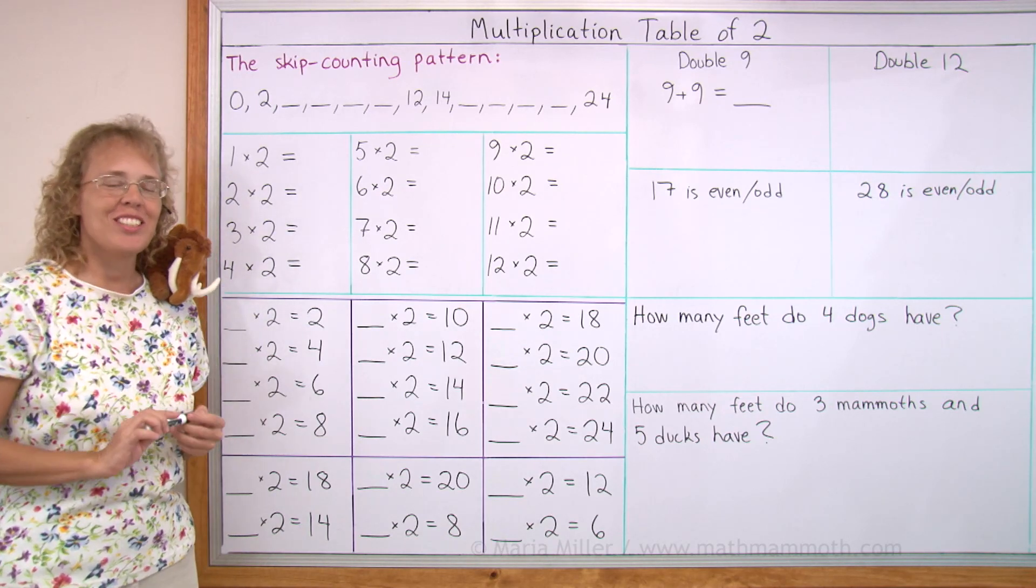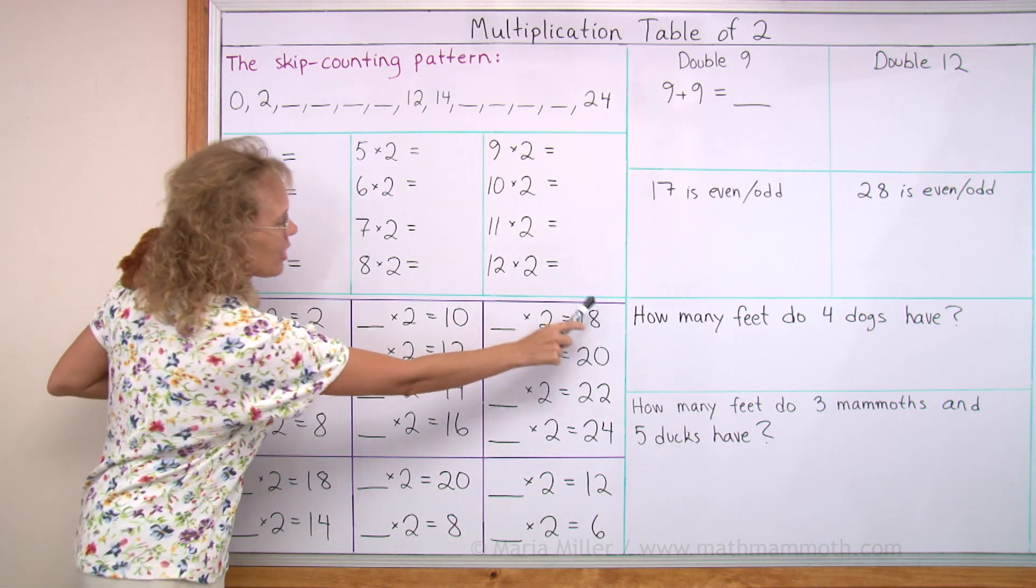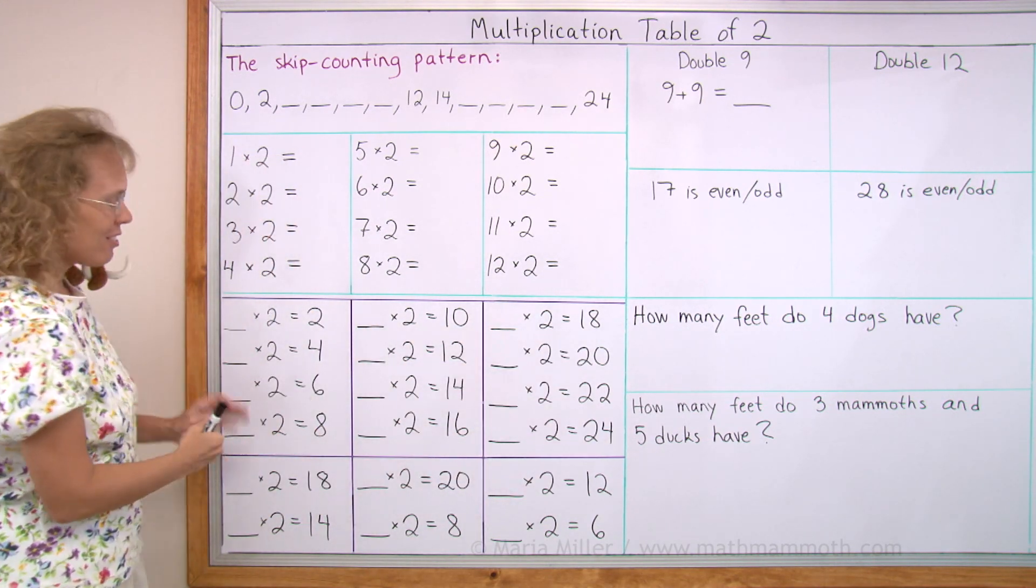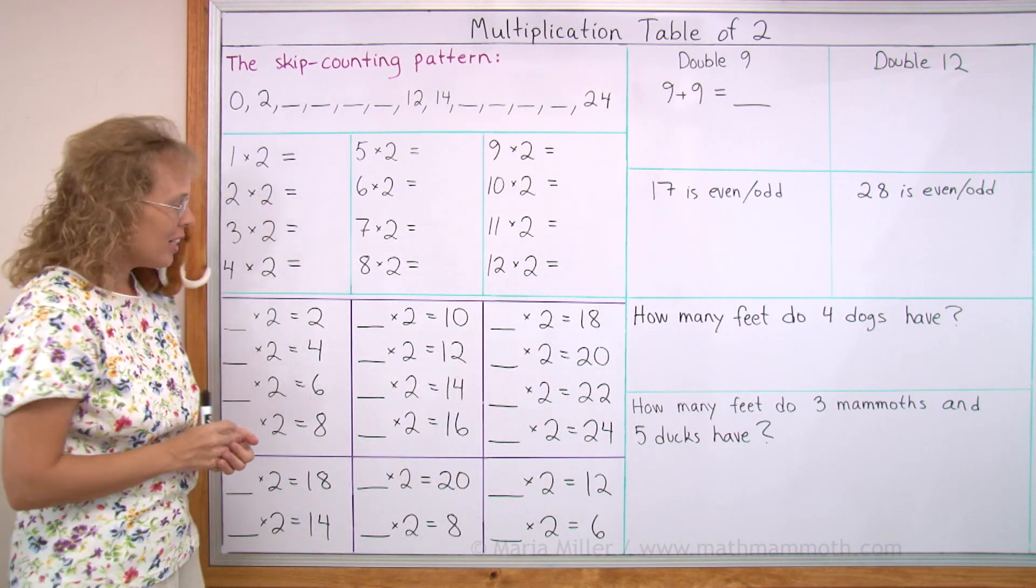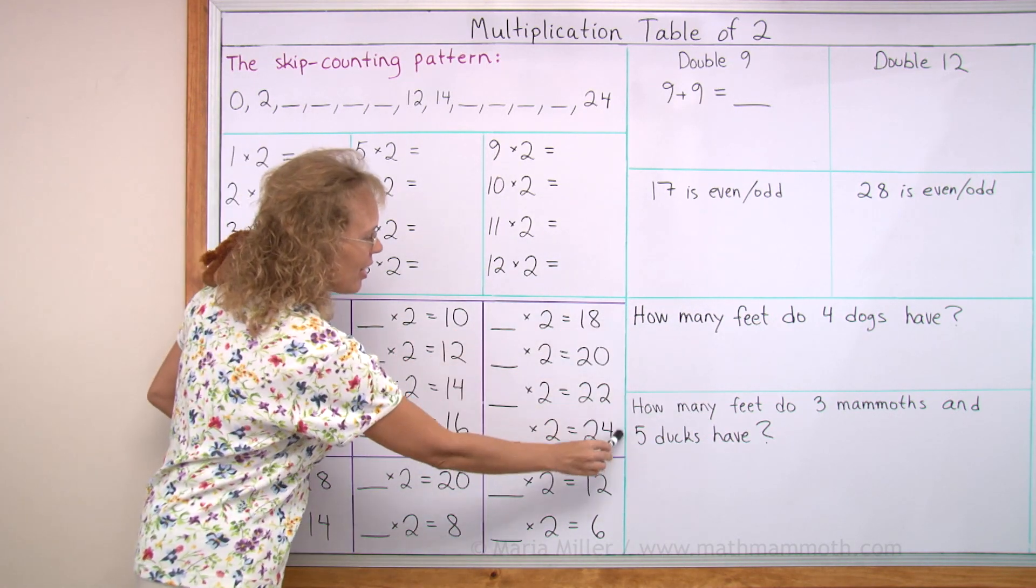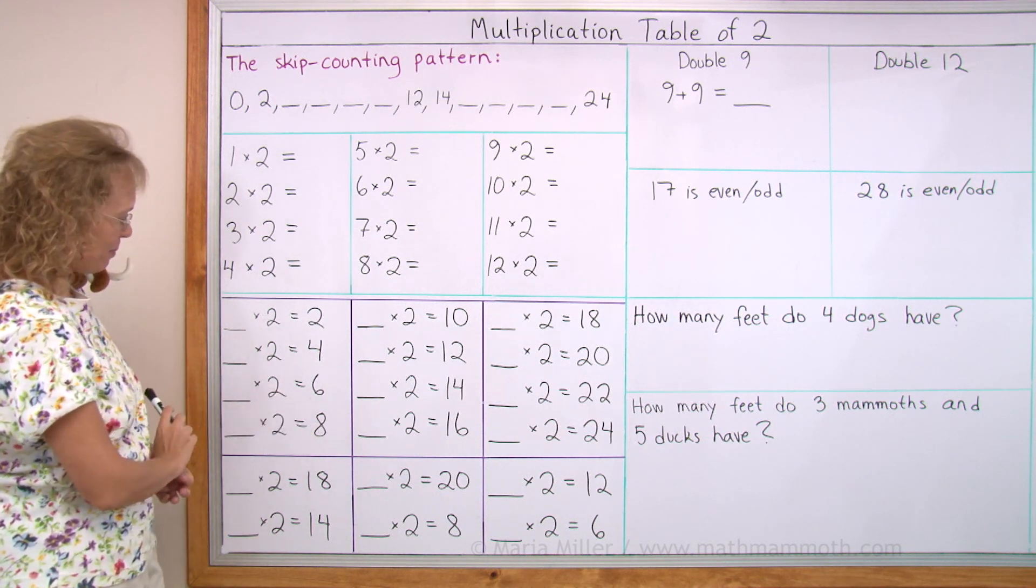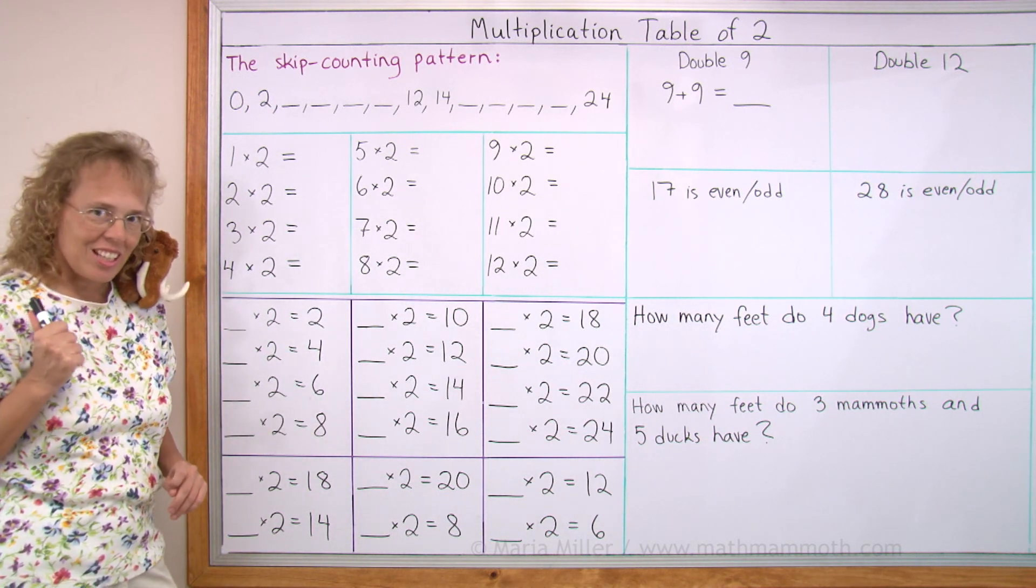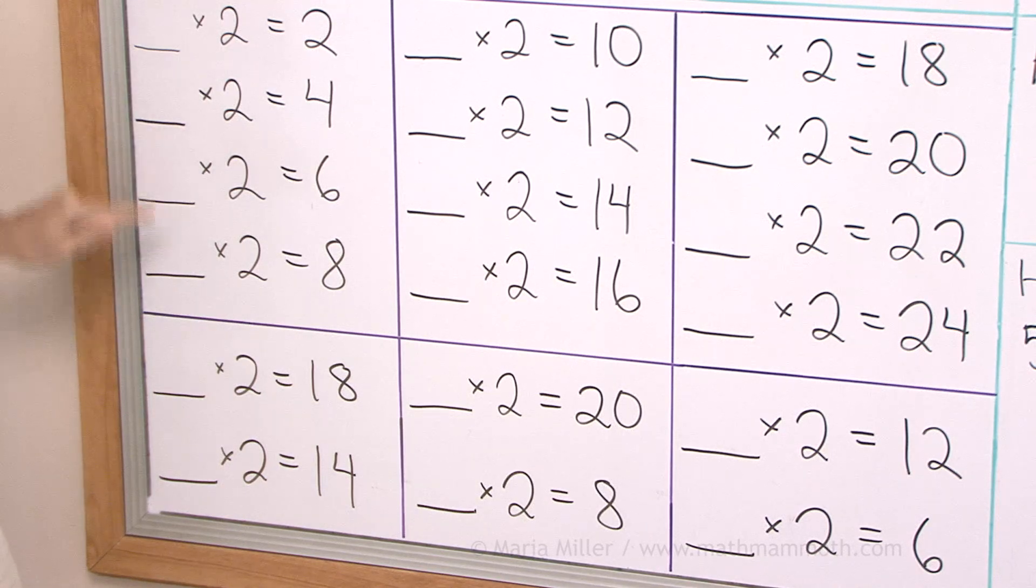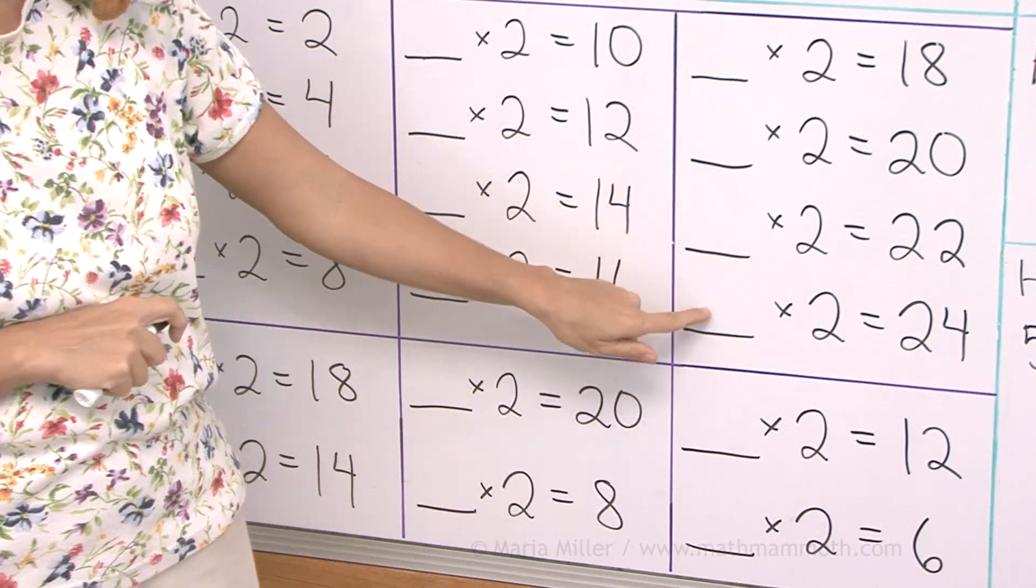Now let's go on and do the table backwards. As you can see here in this purple section, I have again written out the table of two. Now it has the answers here, but it is missing how many times two gives you that answer. And I'll tell you the answers now. They are 1, 2, 3, 4, 5, 6, 7, 8, 9, 10, 11, and 12.